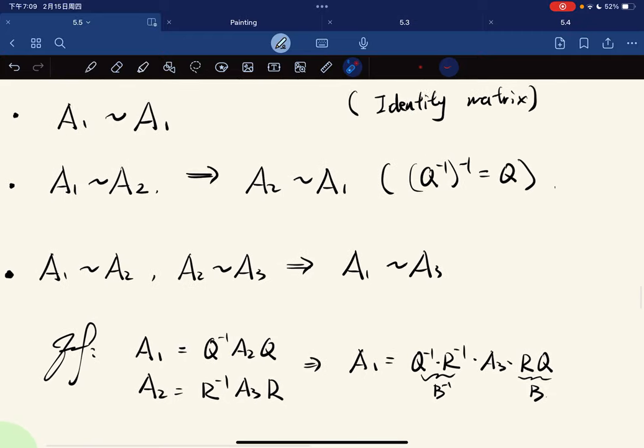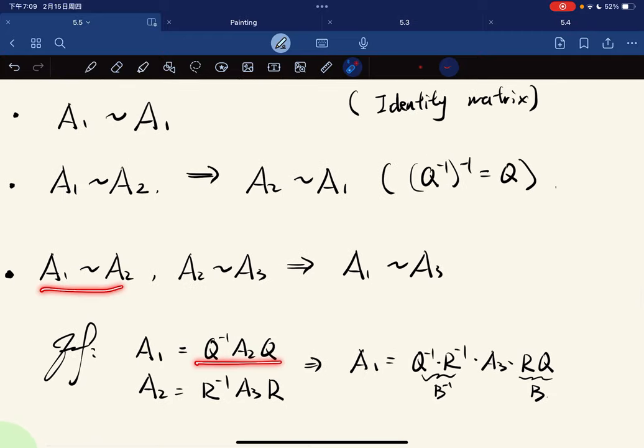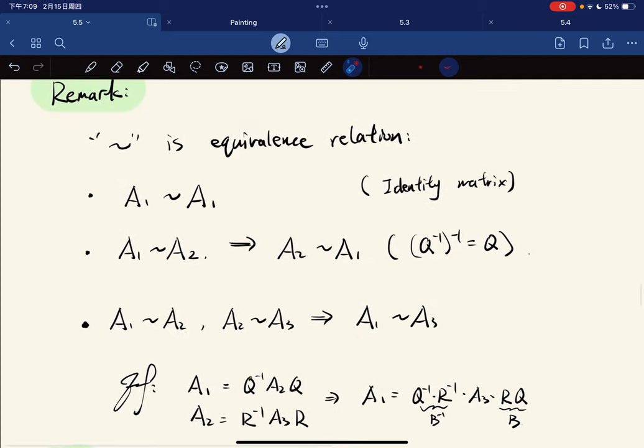For transitivity: if A1 is similar to A2 and A2 is similar to A3, then A1 is similar to A3. We just substitute A2 with this thing, which gives this. Now let B equal R times Q, and we have A1 similar to A3. It's an equivalence relation.